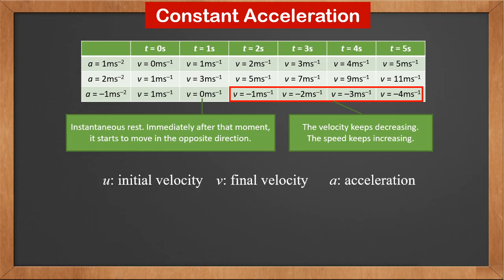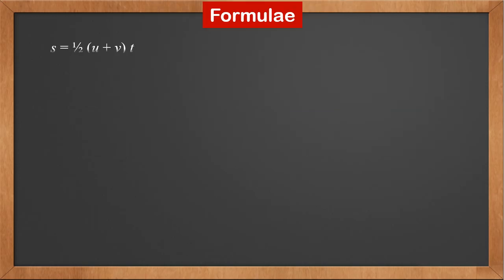We use u for initial velocity, v for final velocity, and a for acceleration. We can see v is u plus a times t. And if we know the initial and final velocity, the acceleration a is v minus u over t. We only care about straight line movement, so u, v, and acceleration can be positive or negative. We know displacement is average velocity times t. Since the acceleration is constant, the average velocity is half u plus v. So the displacement s is half (u plus v) times t.